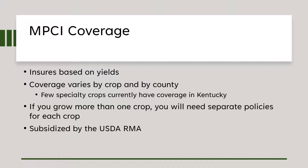Each MPCI policy is written specifically by crop and by county. The USDA Risk Management Agency writes these policies. If you'd like your crop covered, you would go to them and suggest getting a policy for your crop in your county. The key with MPCI is that it insures based on your yields — looking at your past five to ten years of yields to determine how many bushels or units you should insure in case of disaster.